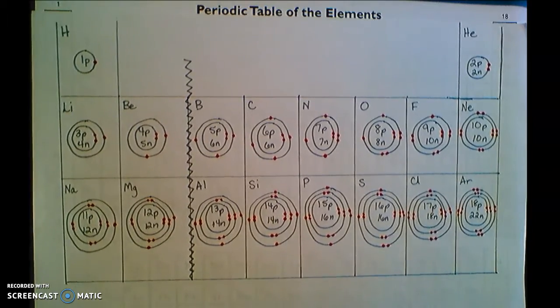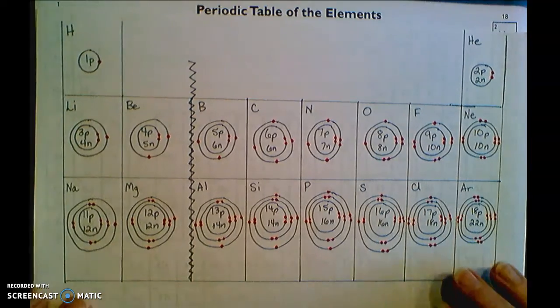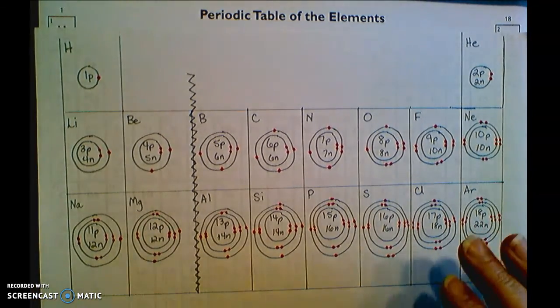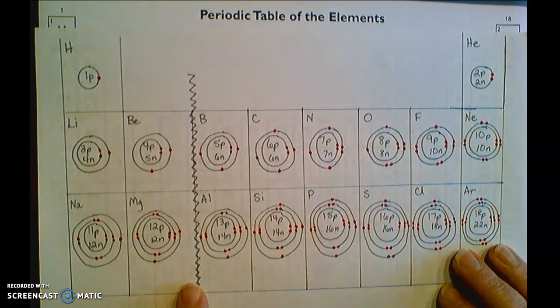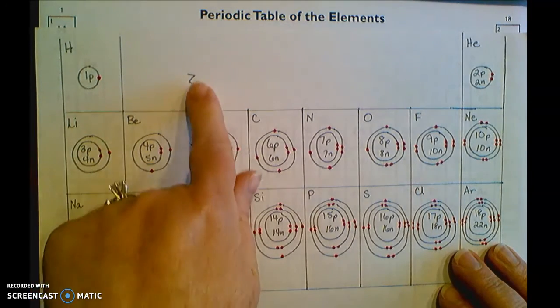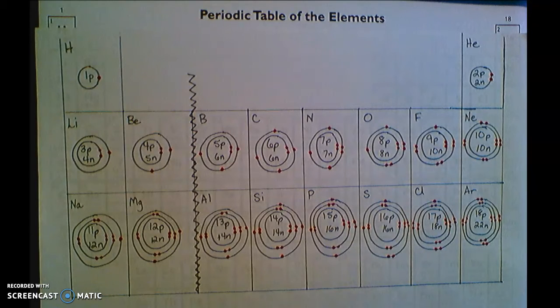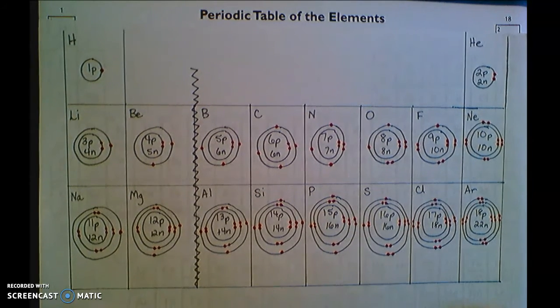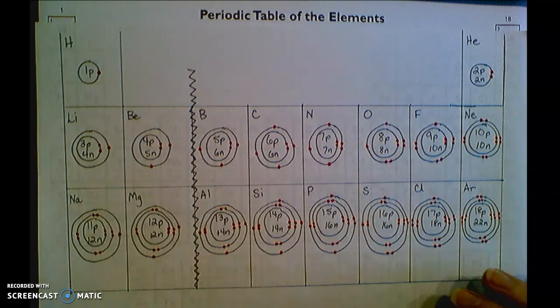So if you look at the Bohr models for the elements, the first 18 elements, and you look at them in terms of the periodic table. What I've got here is the different Bohr models set up like the periodic table is set up. Now you've got this space here on the regular periodic table that I've condensed just to fit everything on the page. But these are your Bohr models. And so a couple of things happen, a couple of patterns show up in the periodic table.